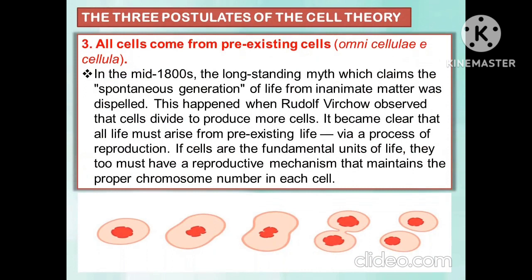The last postulate of the cell theory is that all cells come from pre-existing cells. In the mid-1800s, the long-standing myth claiming that spontaneous generation of life from inanimate matter was dispelled. This happened when Rudolf Virchow observed that cells divide to produce more cells. It became clear that all life must arise from pre-existing life via the process of reproduction. If cells are the fundamental units of life, they too must have a reproductive mechanism that maintains the proper chromosome number in each cell.